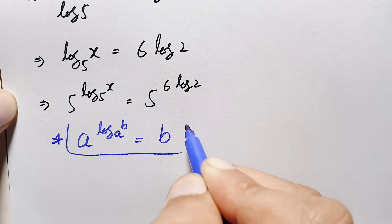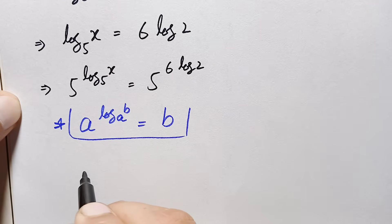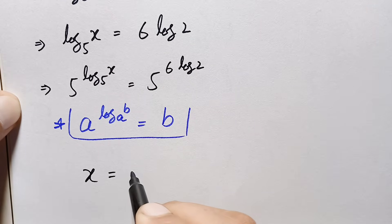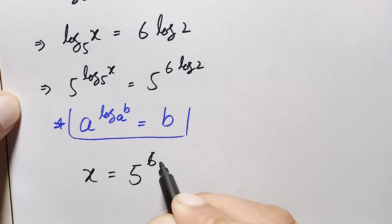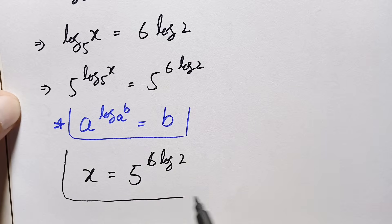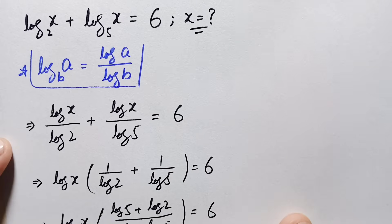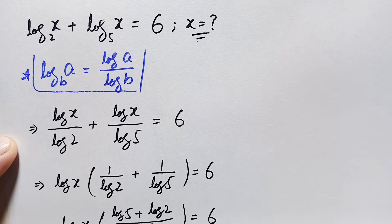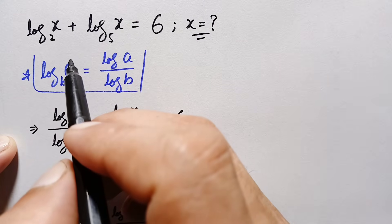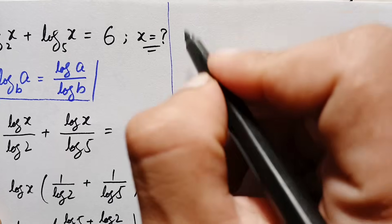Using this logarithm property, we replace the left hand side with x. So x is equal to 5 raised to the power 6 times log of 2. This is the exact and correct value of x. Now we will verify this value.